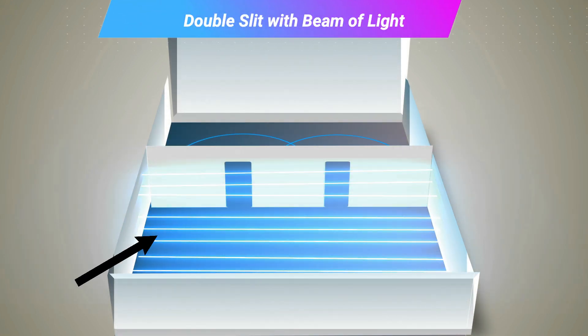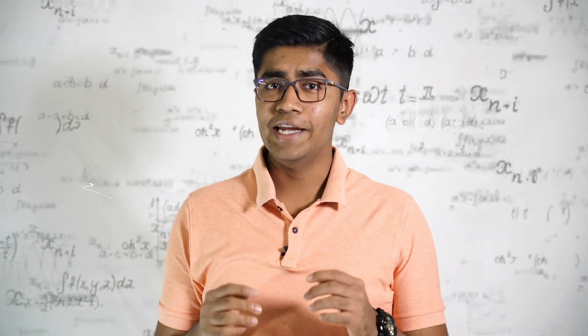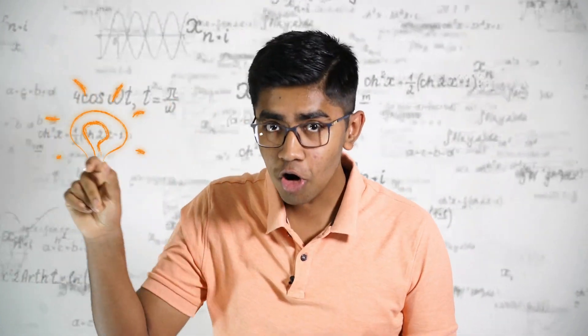The same experiment when performed with a beam of light instead of water gave this result. Alternate light and dark bands with the central light band being the brightest. So light is a wave. Problem solved.